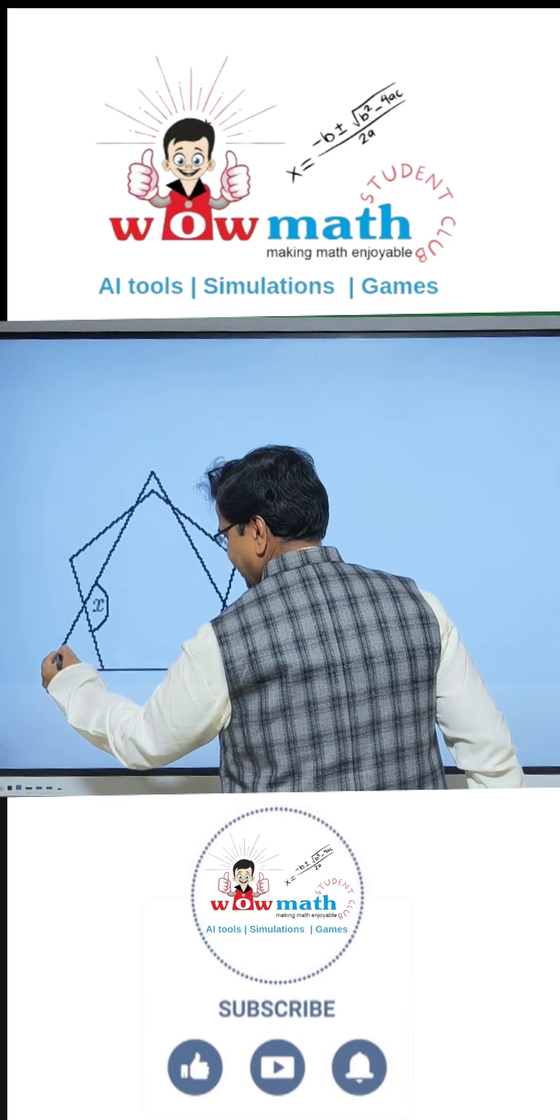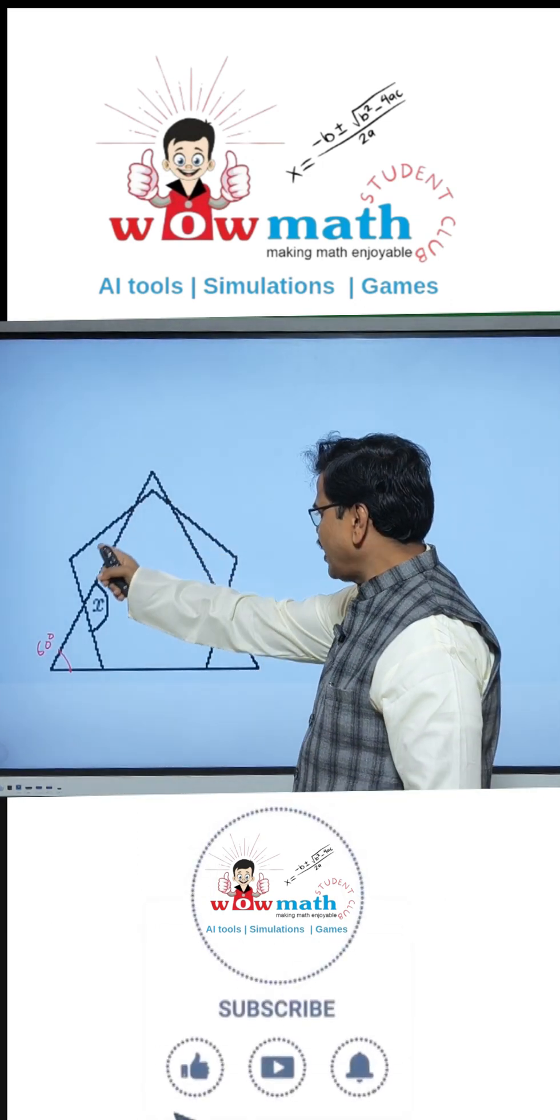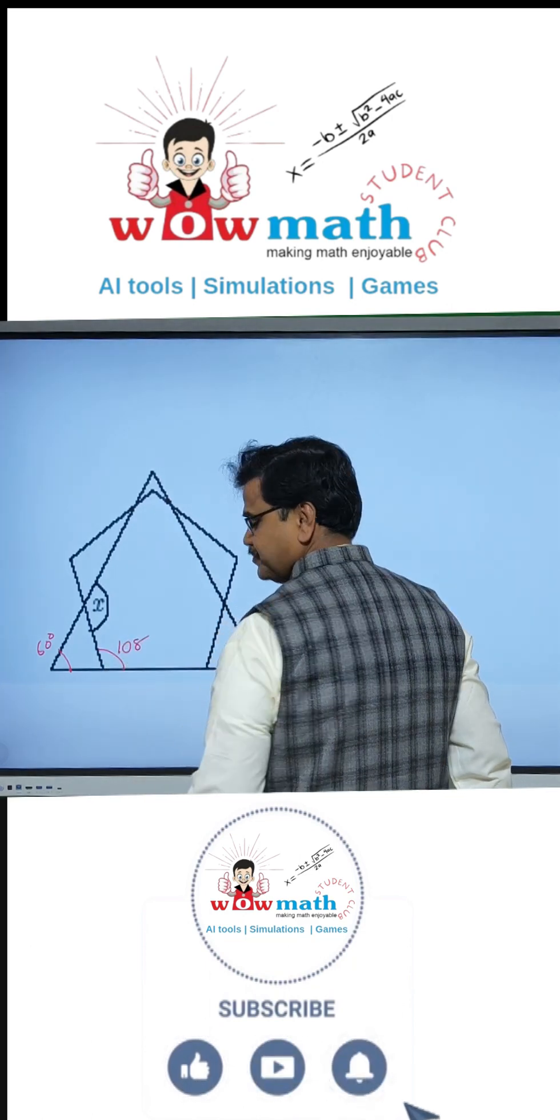It is an equilateral triangle, therefore this angle is 60 degrees. This is a regular pentagon, therefore this interior angle is 108 degrees.